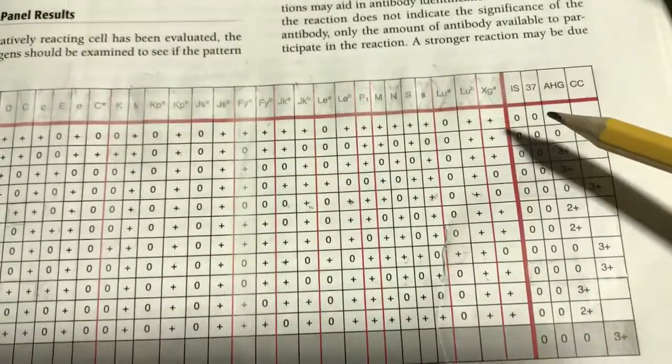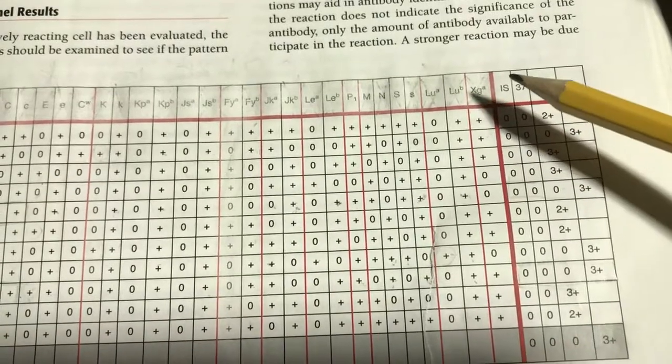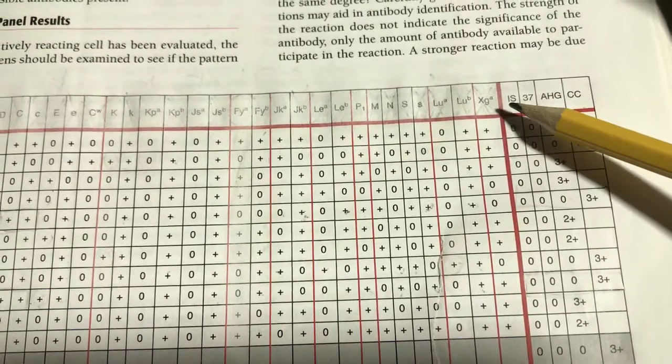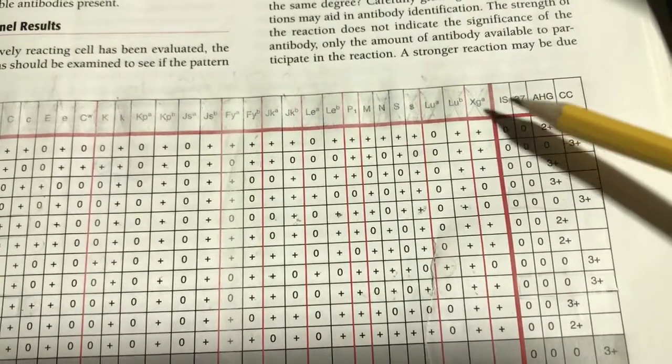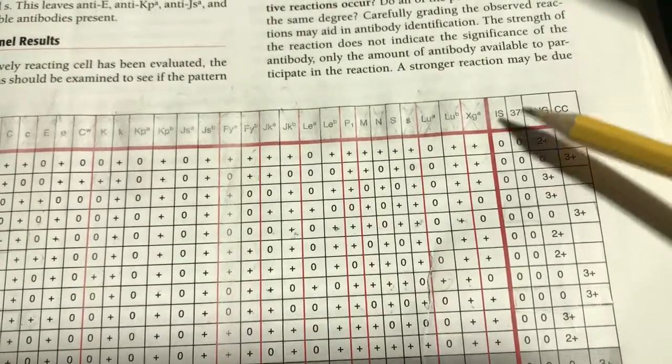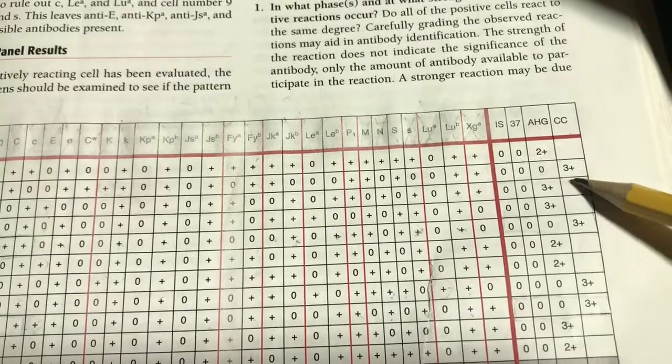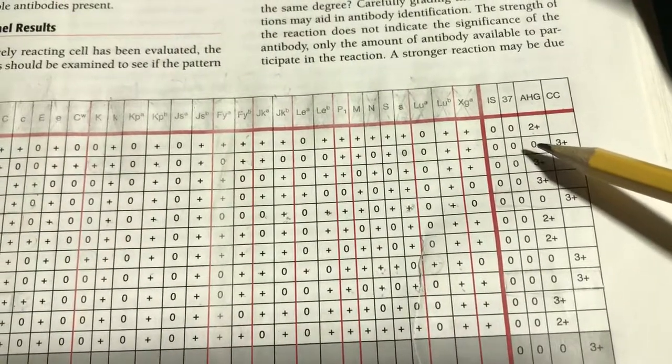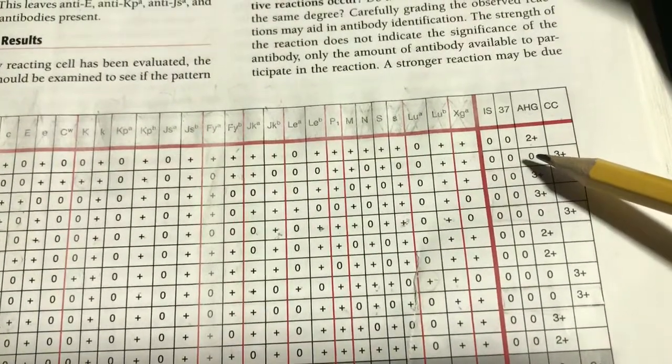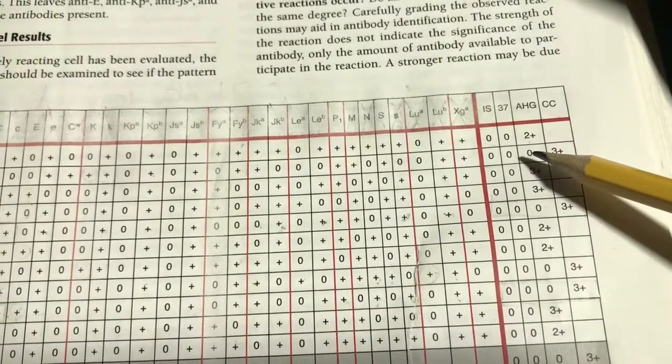These are the antigens that may or may not be present on the donor reagent cells. This is letting us know if the antigen is present or not present. We're not grading reactions here, just present or not present. Over here, we are grading the reactions.